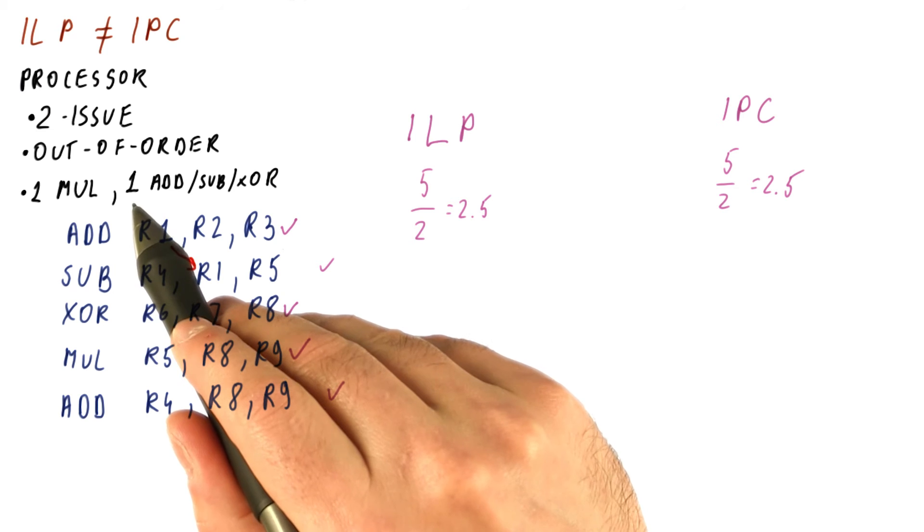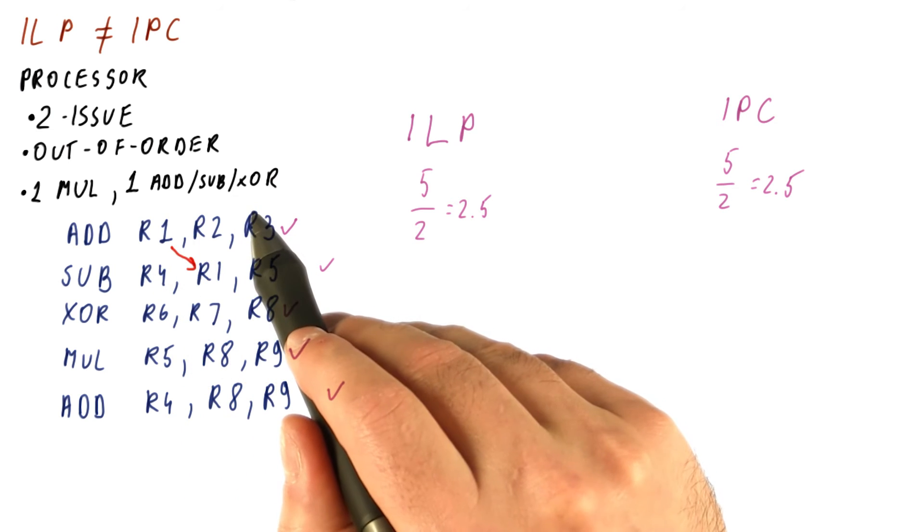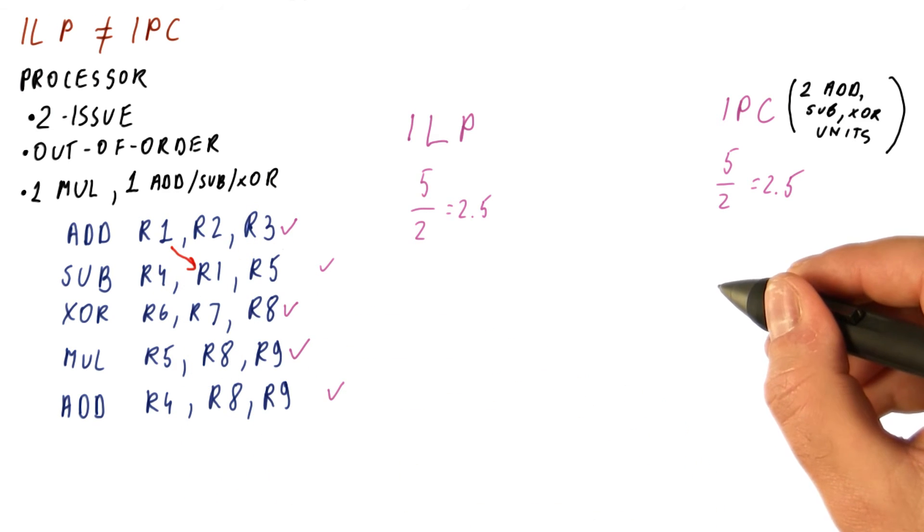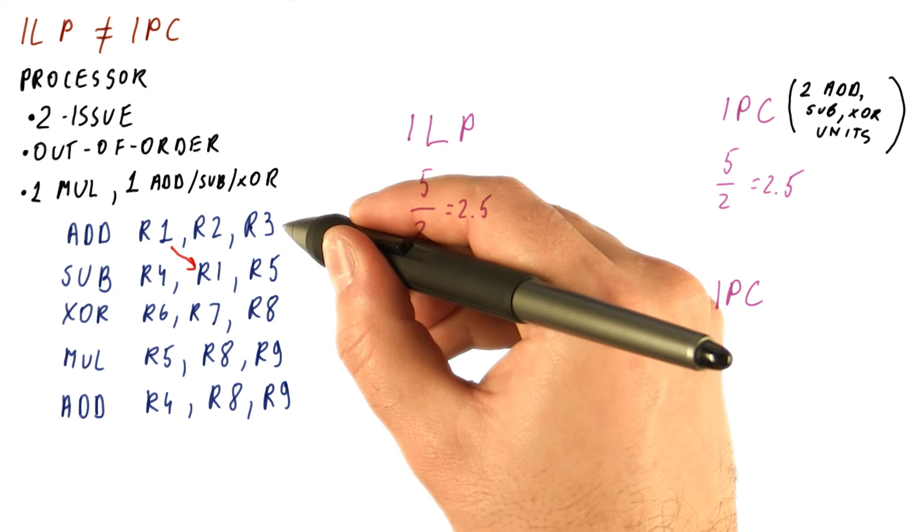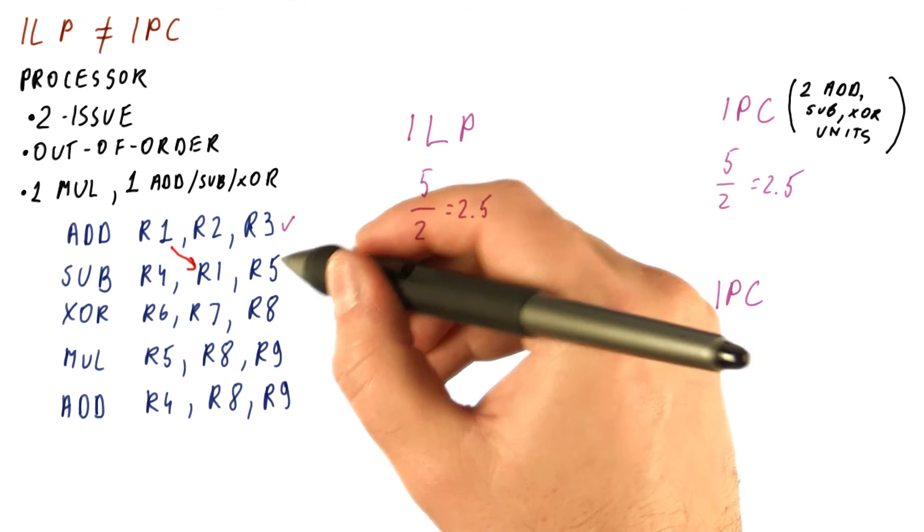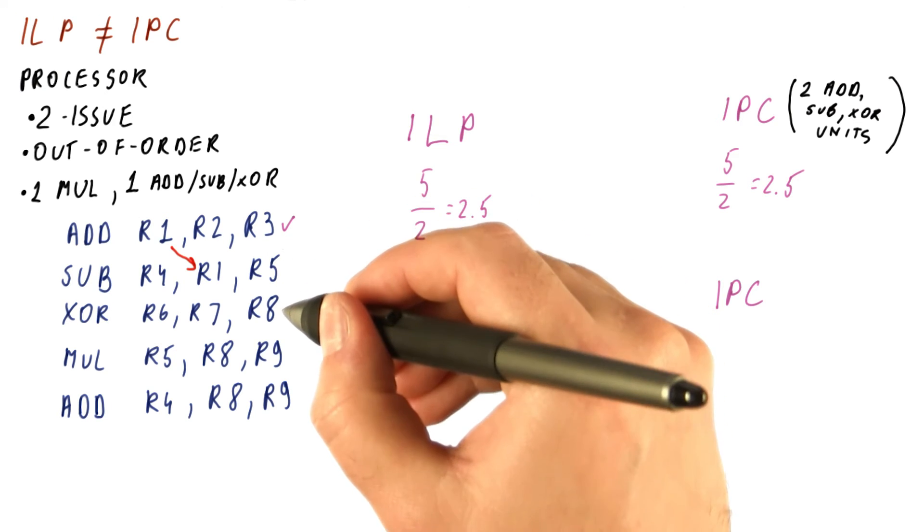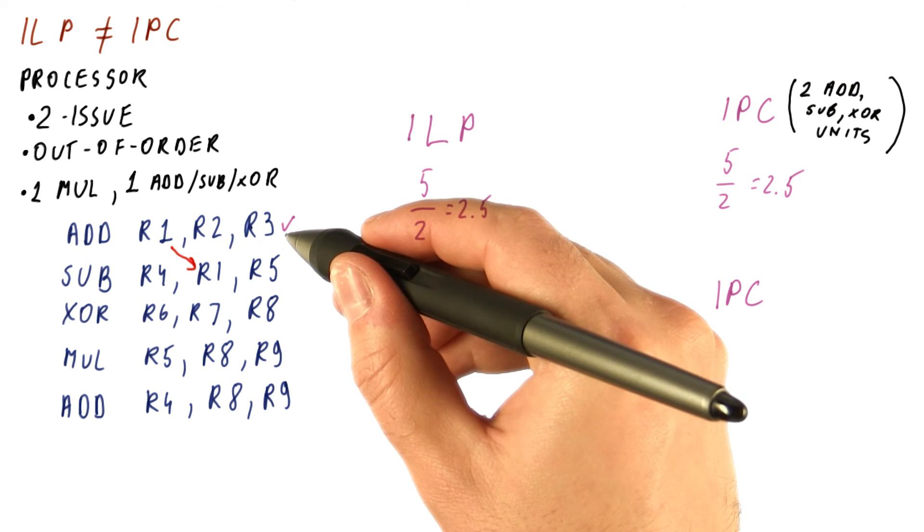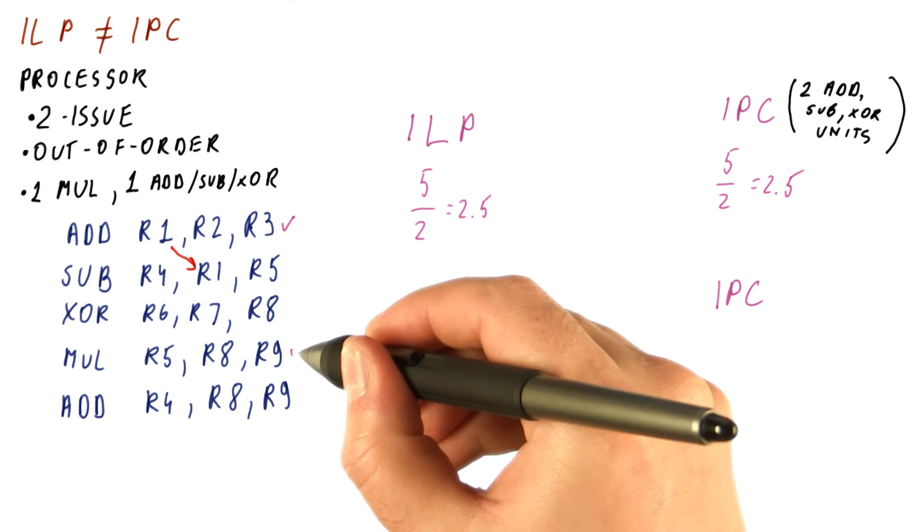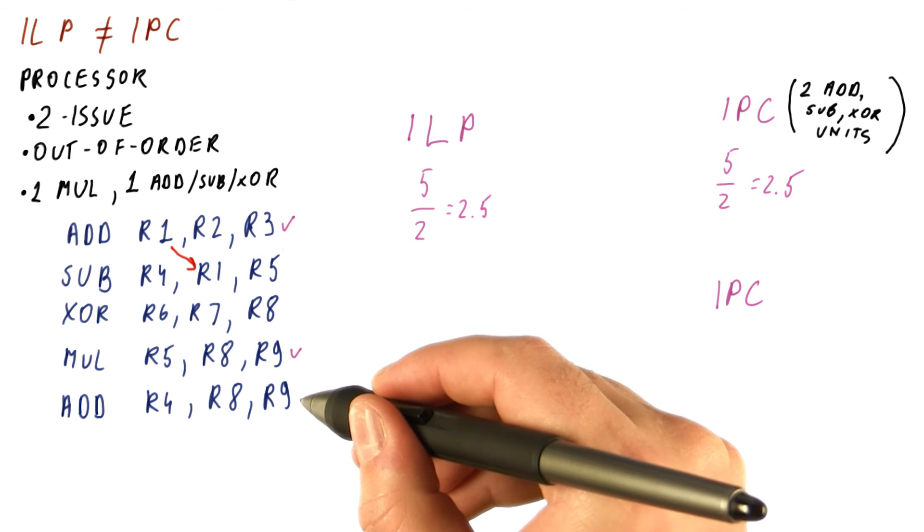For example, if this processor only had one add, subtract, XOR unit, we would now have the IPC of, in the first cycle, we can do this. We cannot do this because of a dependence. We cannot do this because we are already using our one unit that we have for adds, XORs, et cetera. We can do the multiply, and we cannot do this add either.